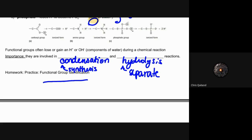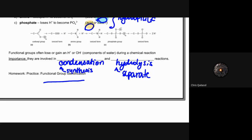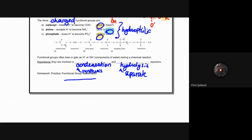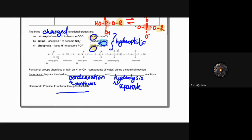The practice functional group identification activity is in the Google Drive shared for unit one student notes — that will be your practice after you finish filling in these notes. A question came up from Andrew regarding alcohols from chemistry: yes, in chemistry you're looking at an alcohol, but that hydroxyl group is attached to a very specific hydrocarbon to make it an alcohol. If it's attached to an amino acid or a fatty acid, it's no longer an alcohol — it's just a hydroxyl group attached to those things. That sums up our final lesson for the day.